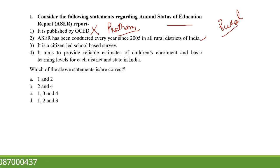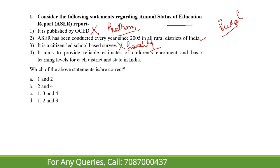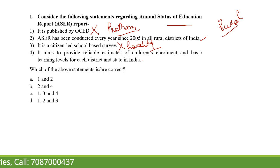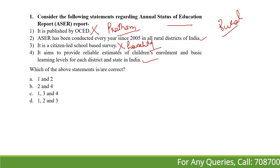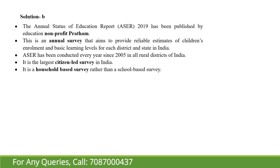Third, it is a citizen-led school-based survey — this is wrong. It is not a school-based survey; it is a household survey. Fourth, it aims to provide reliable estimates of children's enrollment and basic learning levels for each district and state in India — this statement is right. So statements 1 and 3 are wrong, and the correct options are 2 and 4.